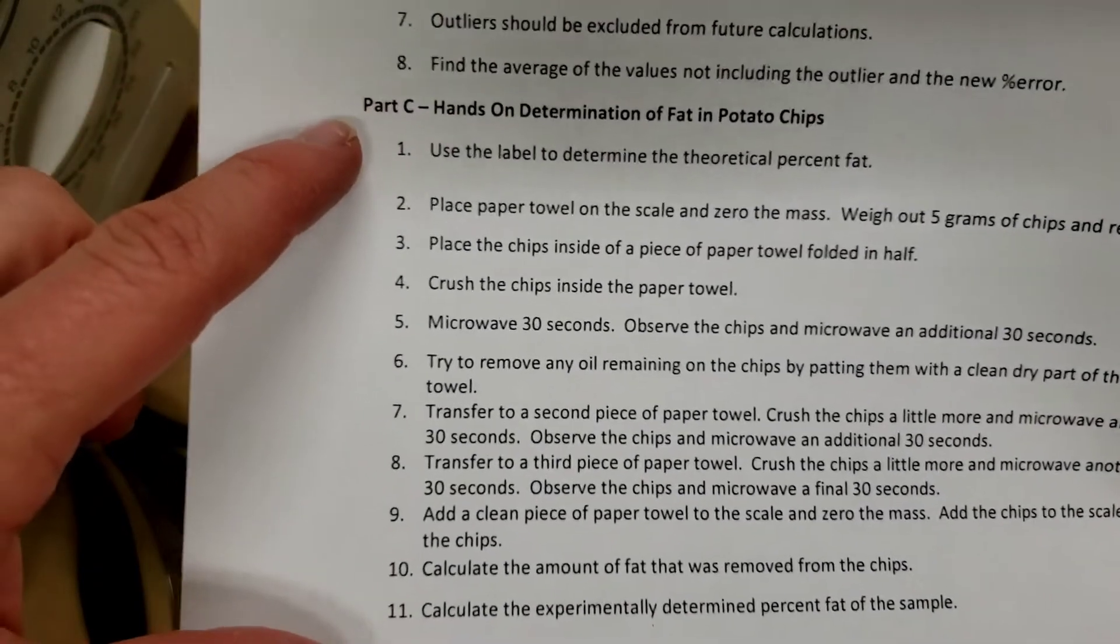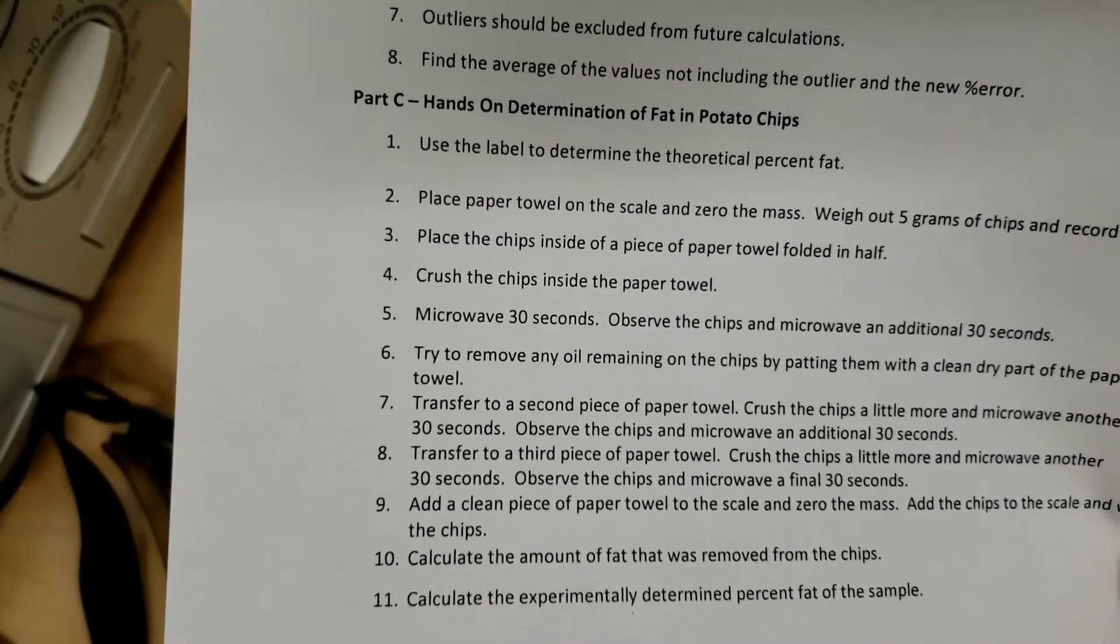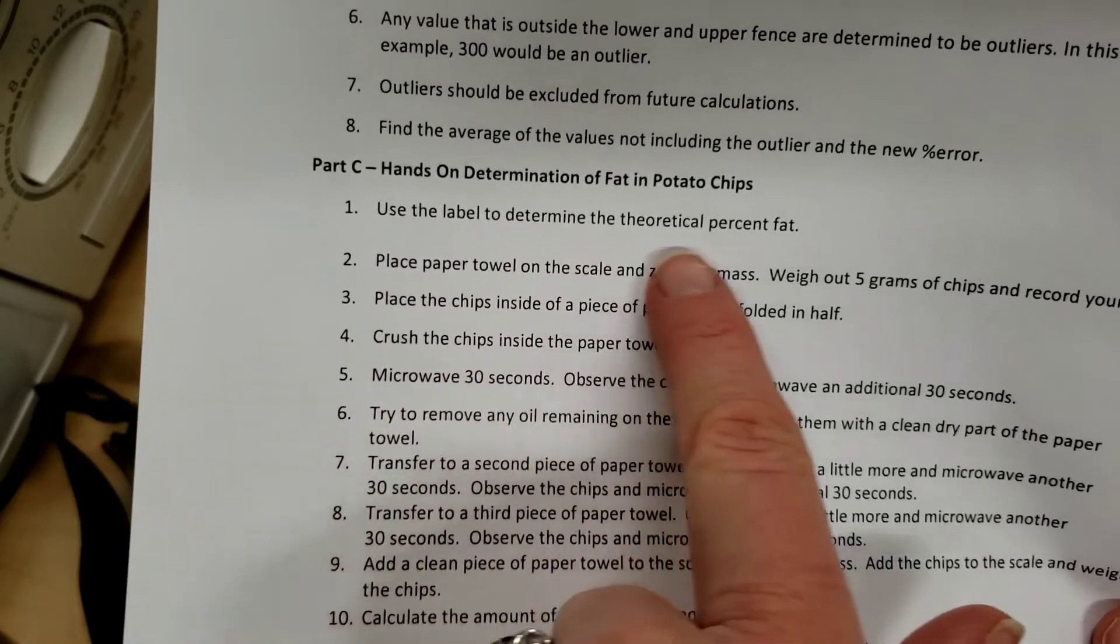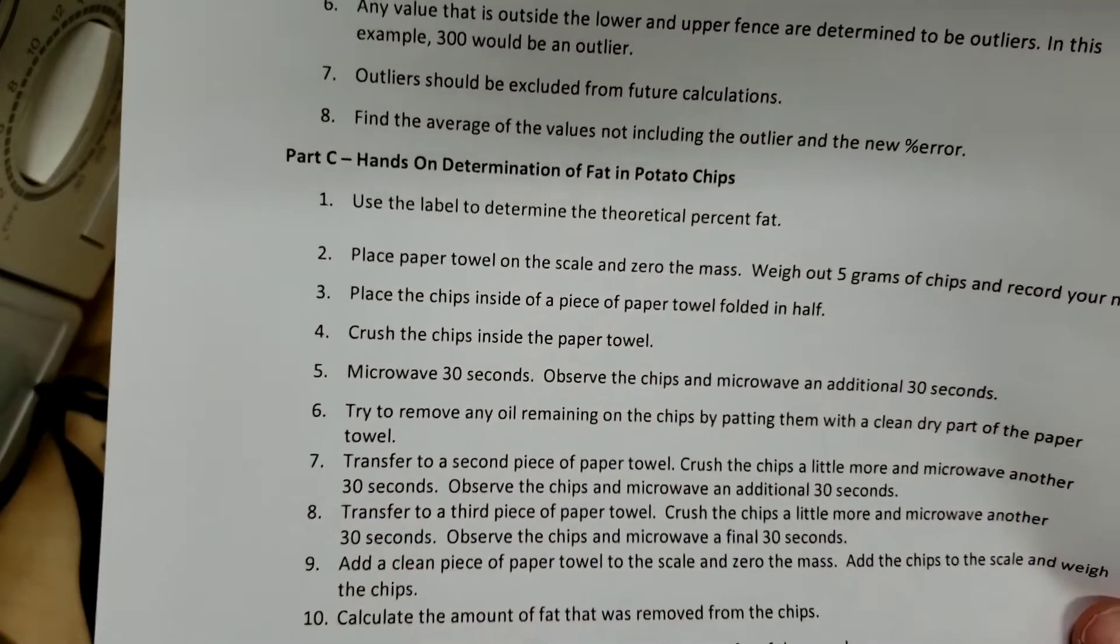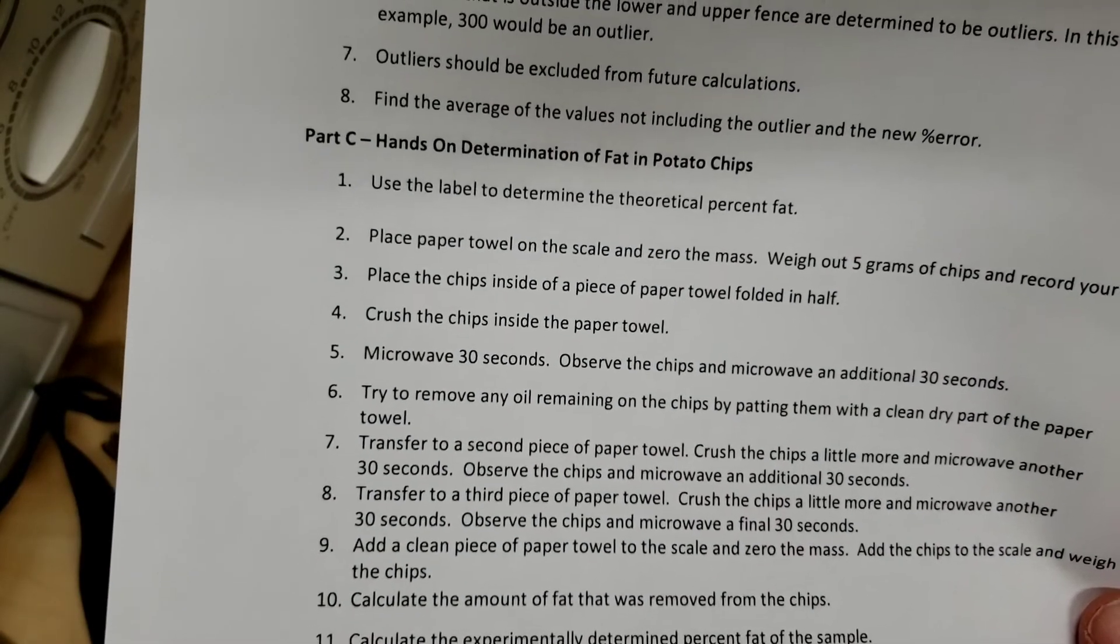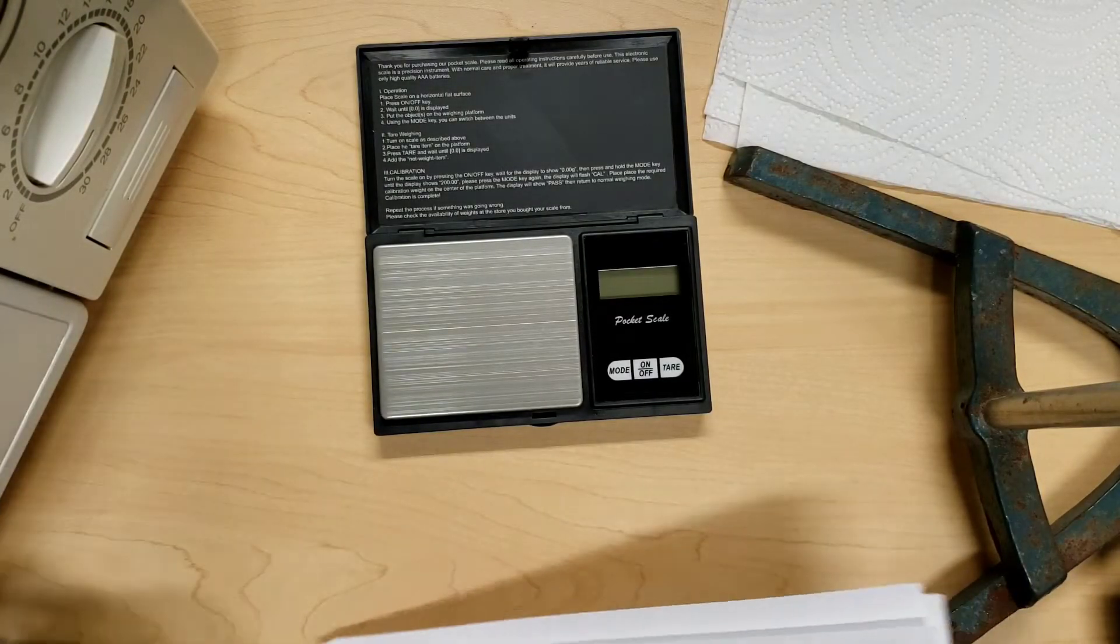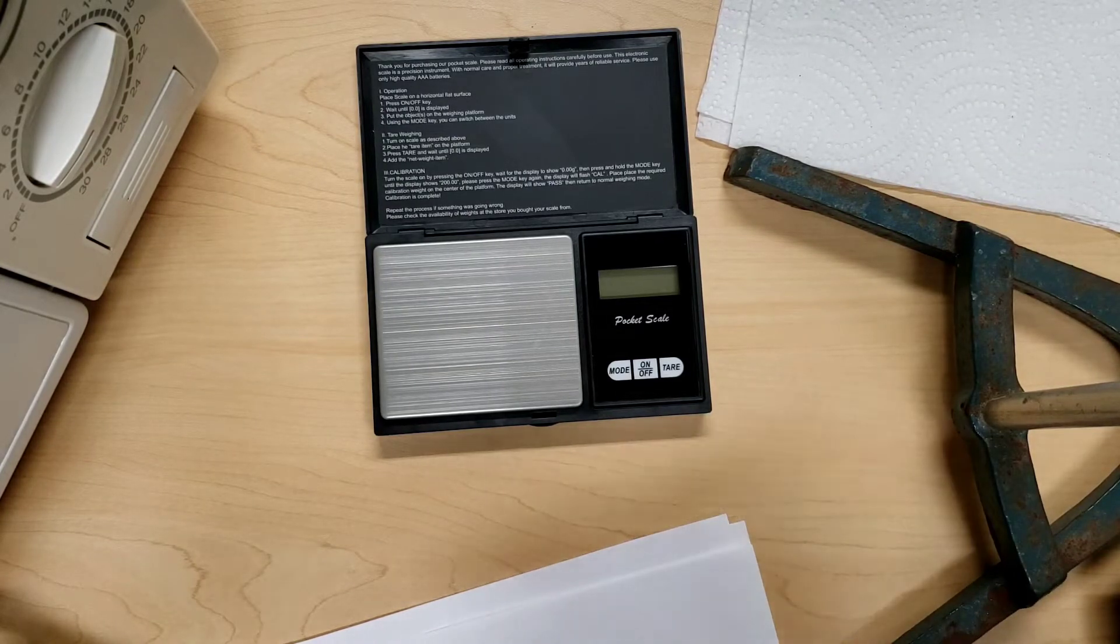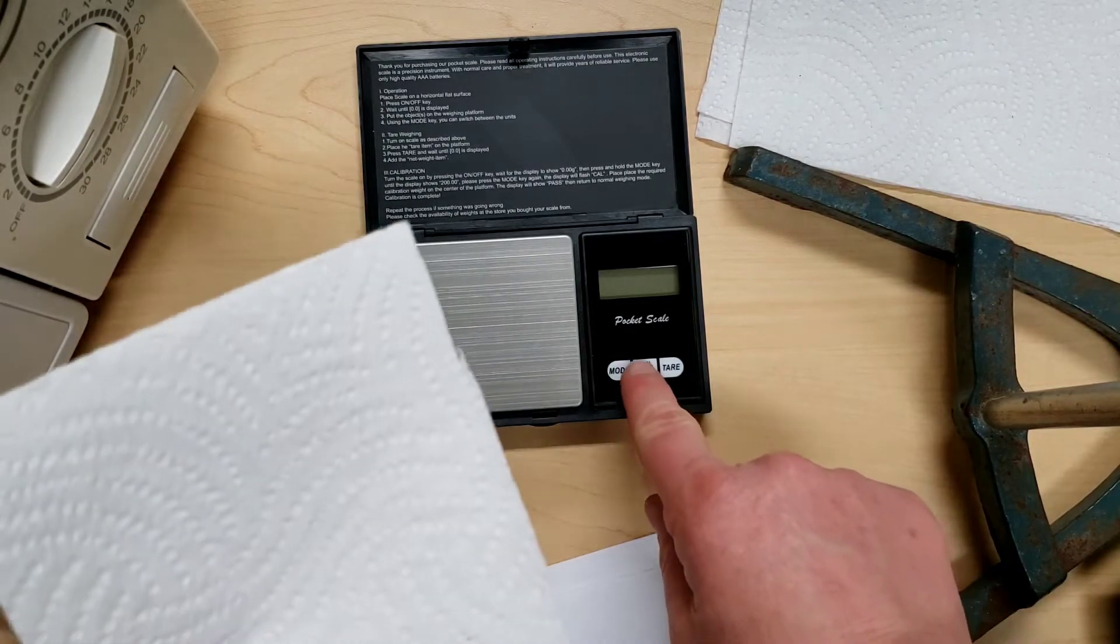Now, at home, you can remove the fat from potato chips, and there's a method that we can use. You're going to determine that theoretical percent fat using your potato chip label, and we're going to remove the fat partially by using paper towel.